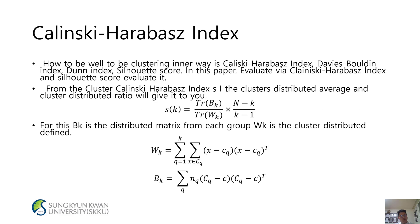Calinski-Harabasz index: how and where to cluster our data uses the Calinski-Harabasz index, Davies-Bouldin index, Dunn index, and Silhouette score. In this paper, evaluation is via the Calinski-Harabasz index and Silhouette score. From the cluster Calinski-Harabasz index, Si is the cluster-distributed average and cluster-distributed ratio. SK = TR(Bk) / TR(Wk) * (n - k) / (k - 1), where Pk is the distributed matrix from each group and Wk is the cluster-distributed defined.